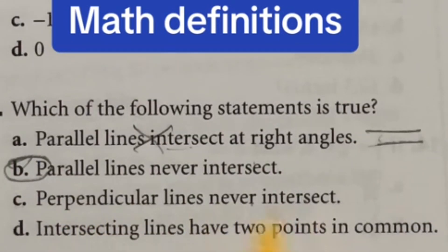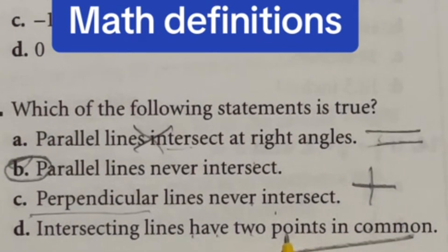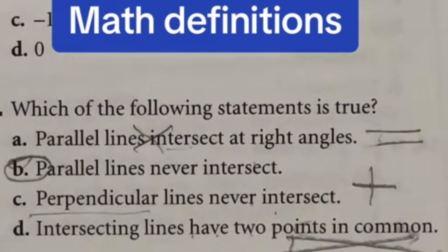Perpendicular lines never intersect. Perpendicular means that the two lines come together at a 90 degree angle, so they do intersect right there at that point. And intersecting lines have two points in common. That's false because a line goes in one direction or the other. So if you ever are doing that, another line would cross it, but they would never cross again in the Euclidean plane.